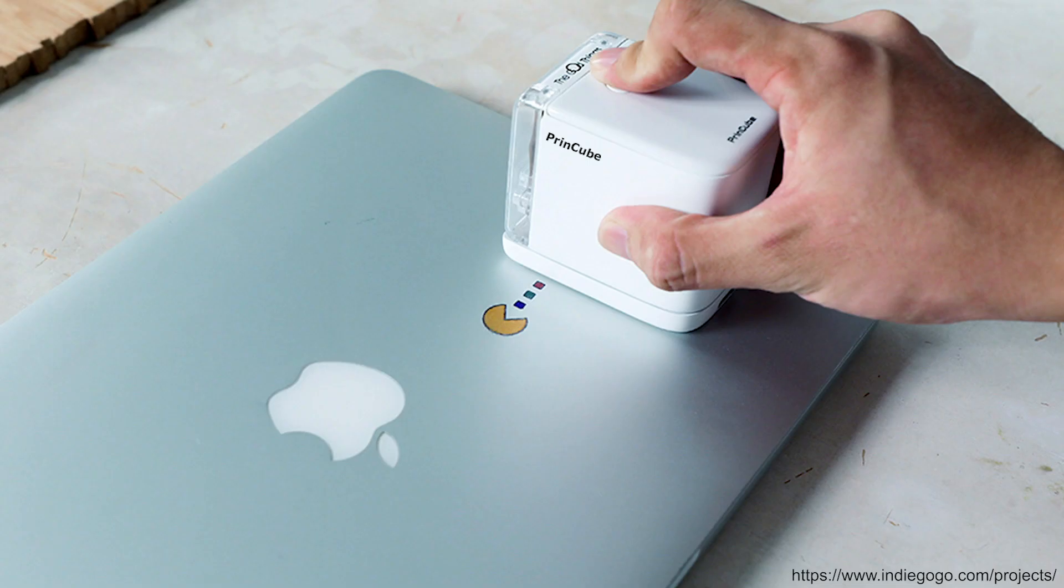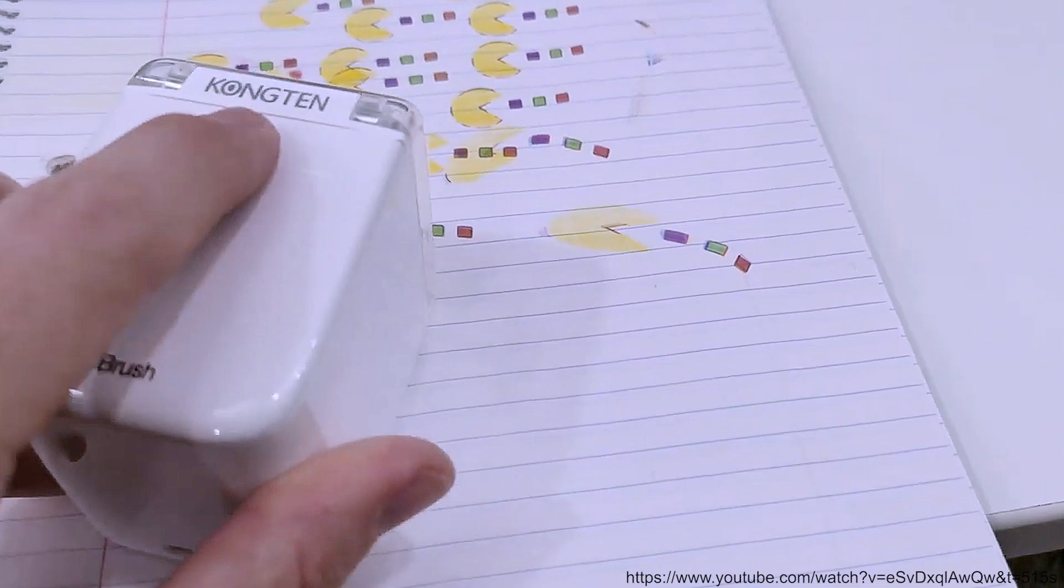Commercially available handheld printers have already tried to address some of these issues and brought the design process closer to the object. However, these devices don't track the speed and direction of movement. This means the user requires a lot of practice to learn how to control the device and how to print undistorted images. And most importantly, current handheld printers are limited to non-conducting ink.